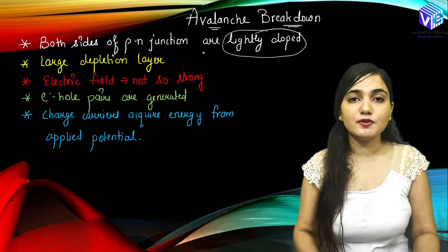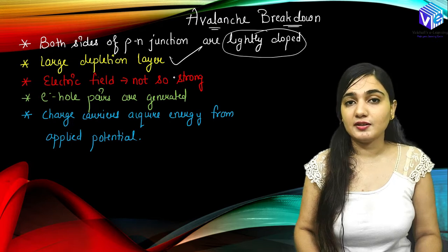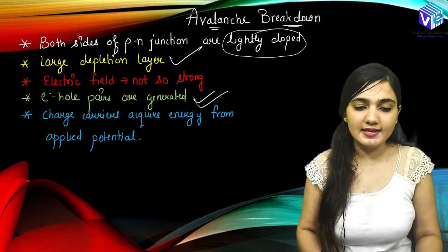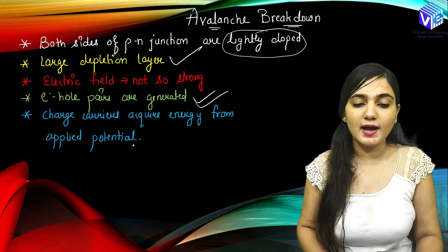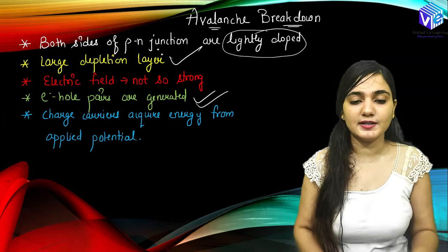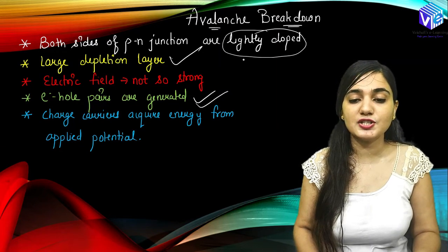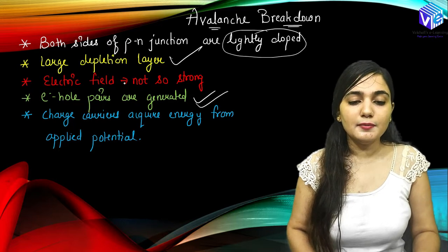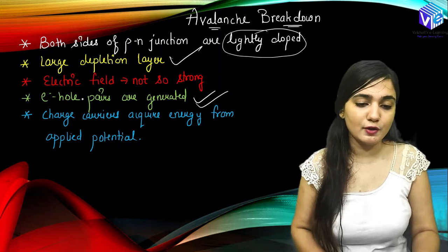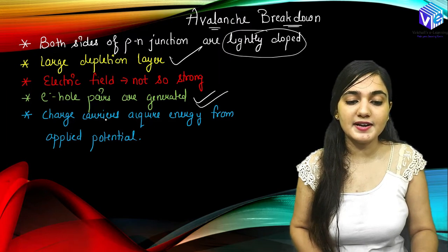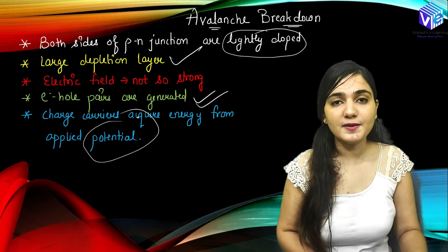When the lightly doped p-n junction is there, we will be having a larger depletion region. When the depletion region is larger, the electric field would not be so strong, and the electron-hole pairs generated are less. We will be having fewer electron-hole pairs generated, and the charge carriers acquire energy from the applied potential. So comparing: Zener breakdown has a heavily doped p-n junction — here it is lightly doped. There we had a small depletion region — here we have a large depletion layer. There we had a strong electric field — here it is not so. There we had many electron-hole pairs generated — here we do not. There the charge carriers were not dependent upon the applied potential — here they are dependent upon the applied potential.